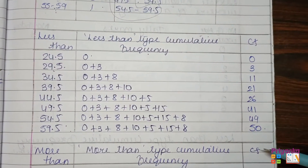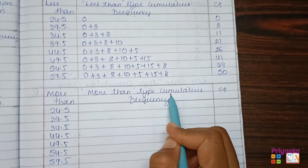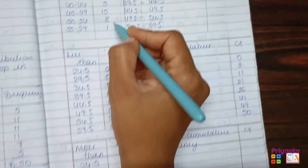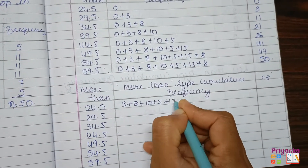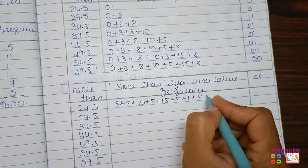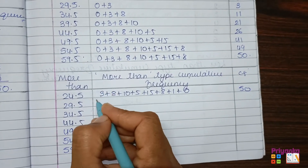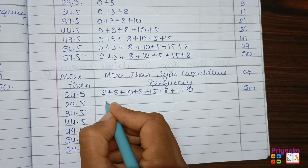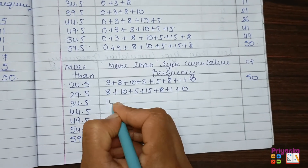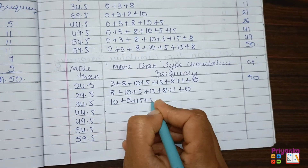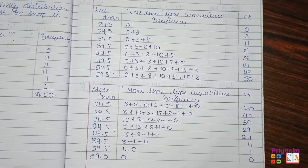For the more than type cumulative frequency, copy the same lower boundary points from top to bottom. Start with the total of all frequencies: 3+8+10+5+15+8+1 = 50. Then successively subtract each frequency from the top: remove 3 to get 47, remove 8 to get 39, then 10, 5, 15, 8, 1, and keep 0 at the last entry. This completes both less than and more than cumulative frequency distributions.